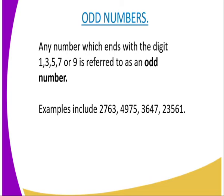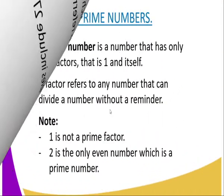As you can see, we have several examples on our screen. We have 2,763 — the last digit is 3, so it is an odd number. We have 4,975 — the last digit is 5, so that is an odd number. We have 3,647 and also 23,561 — the last digits are odd numbers.